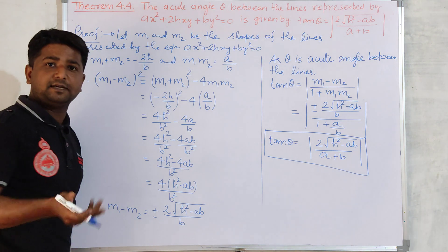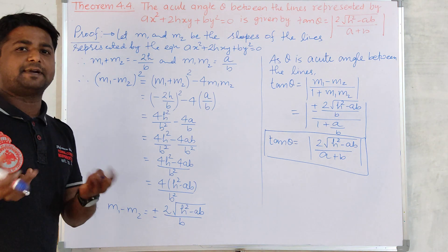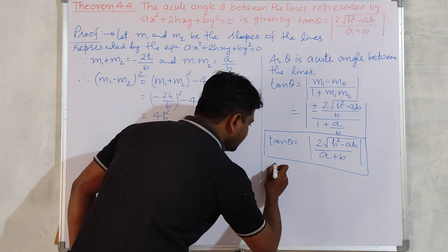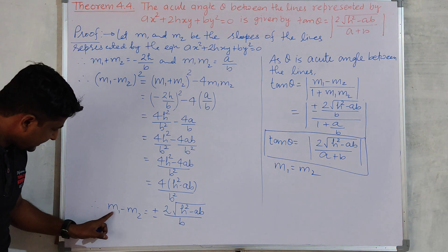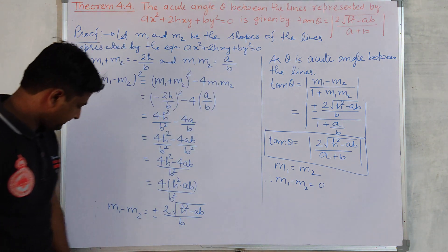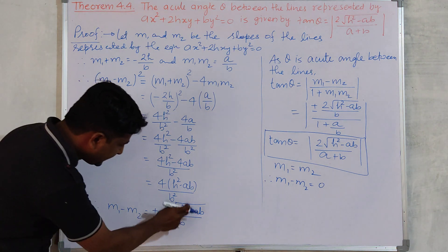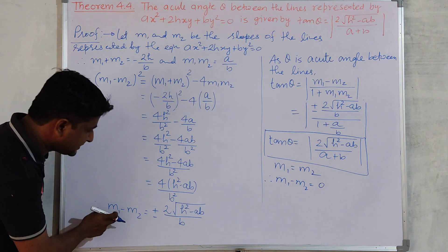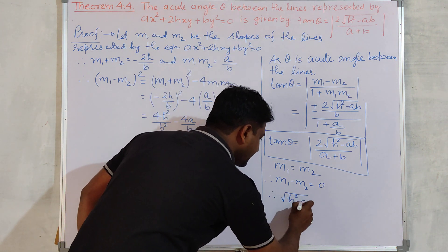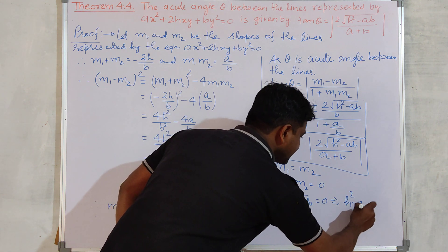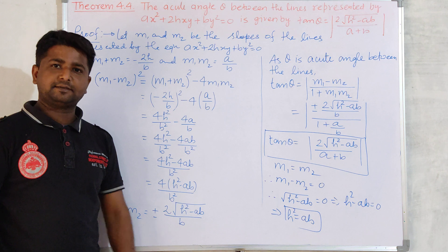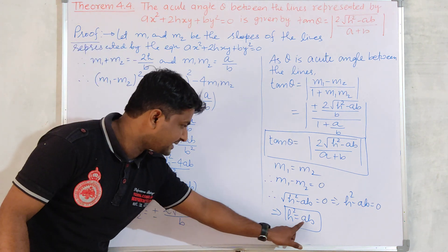Suppose the two lines are coincident. Coincident means the two lines are the same line, so the two slopes are not different — m1 = m2. This means m1−m2 = 0. Setting this difference to zero gives h² = ab. So when both lines are coincident, the condition is h² = ab.